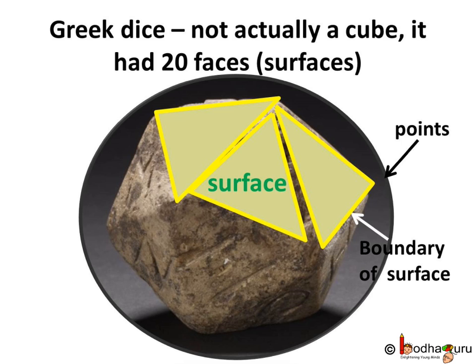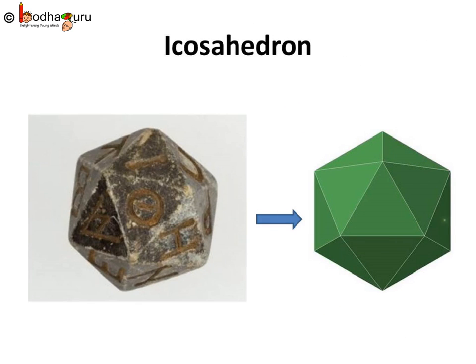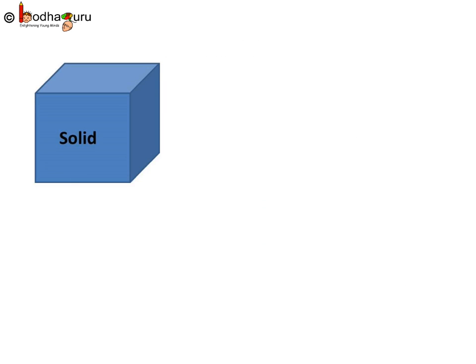And these lines or curves end in points. Now, if you realize this Greek dice was actually an icosahedron, that is a solid figure with 20 plane faces, specifically equilateral triangles. And this is how they defined 3D shape, that is a solid.